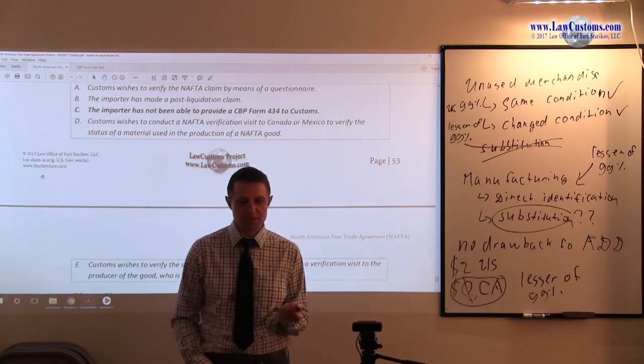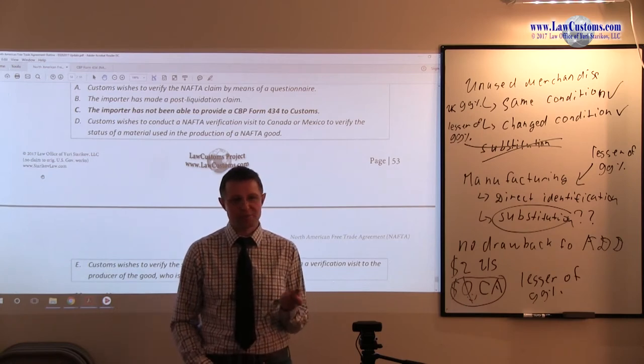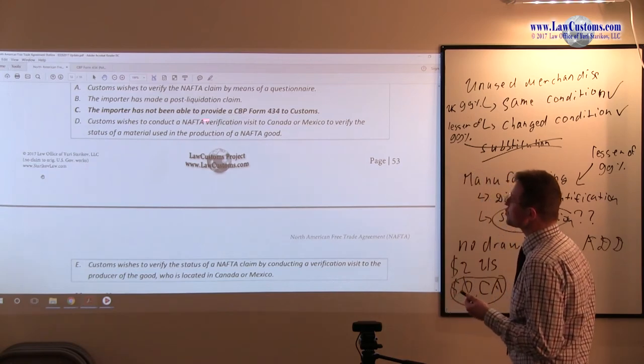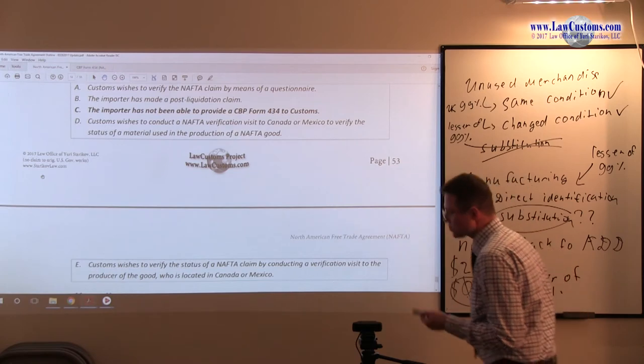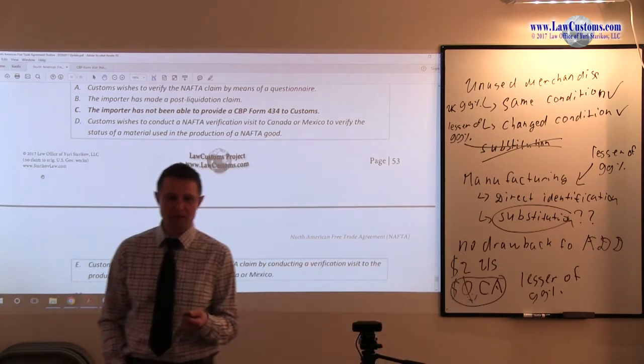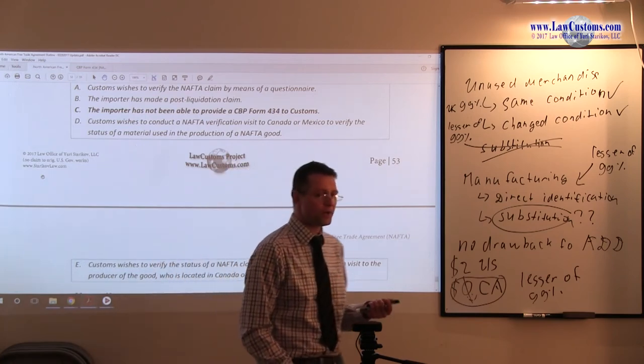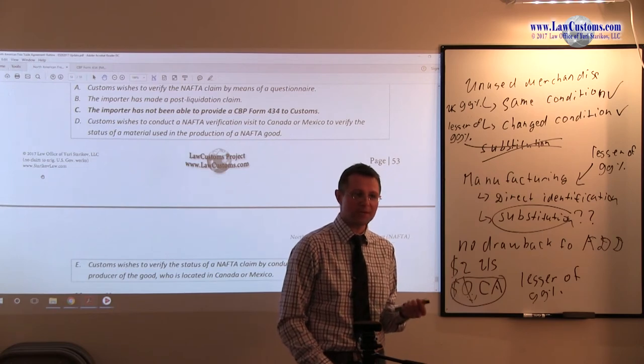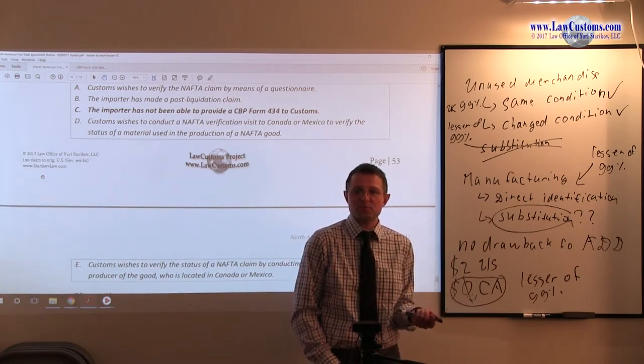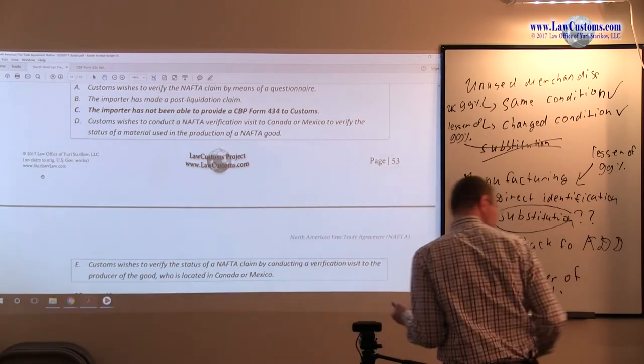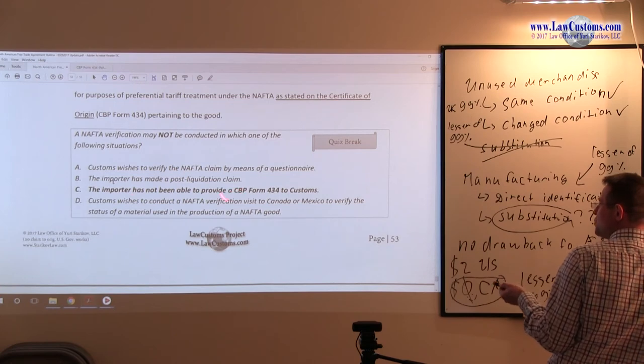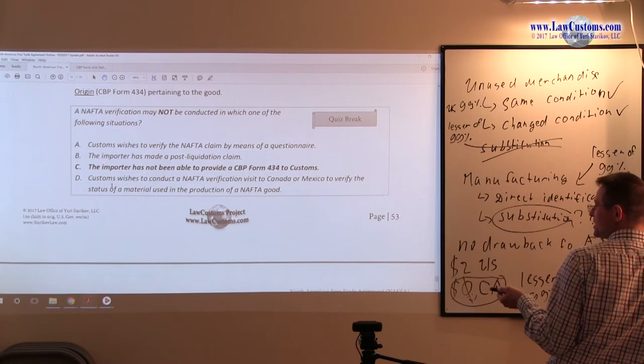Recall that the time limit for filing is one year after the date of importation, so it is possible that liquidation takes place before 1520D time limit runs out. The importer has not been able to provide CBP Form 434 to customs. The Certificate of Origin or CBP Form 434 is a key element for making the claim. If you do not have that Certificate of Origin on file, you were not in a position to make a claim to begin with, meaning that there is nothing to verify in the first place. This is kind of like saying, since there is nothing to verify, there is no purpose of verification, so this makes this answer choice C a correct answer choice.